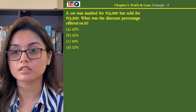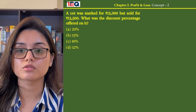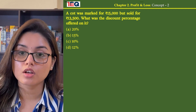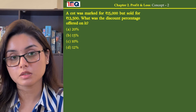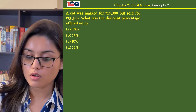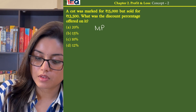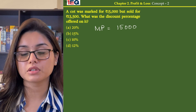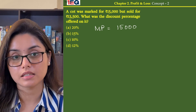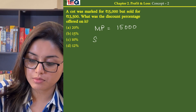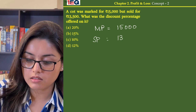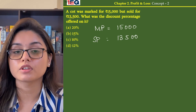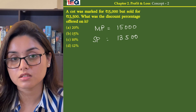A cot was marked for 15,000 but sold for 13,500. What was the discount offered on it? The marked price equals 15,000 and the selling price equals 13,500. We need to find the discount percentage.